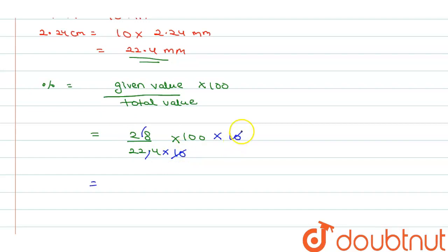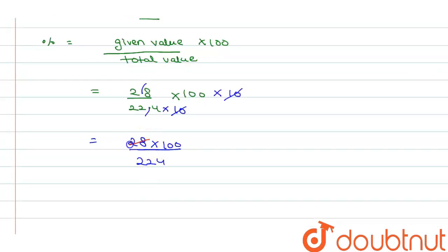This 10 and this 10 cancel out. We can write as 28 multiply 100 divided by 224. Now this is cancelled out by 4.